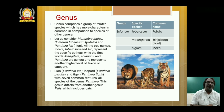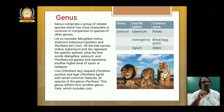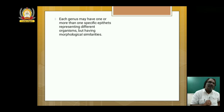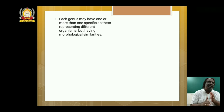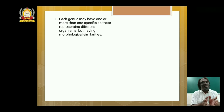Lion, leopard and tiger all have the same genus Panthera, but they are different species. Because they have some similar characters, they come in the same genus. Cat is different, so it comes under a different genus. Each genus may have one or more specific epithets representing different organisms, but having morphological similarities. For example, lion, leopard and tiger are different species under the same genus because they have many similar morphological characters.